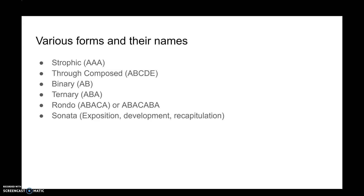Rondo form has an A part, then moves to a B part, comes back to A, goes on to a C part, comes back to A again, and so on. The key theme is that it keeps coming around — that's where it gets its name: rondo. Every time you hear the main A theme, it's followed by a different section each time. This can go on and on, though we rarely get past D or E.